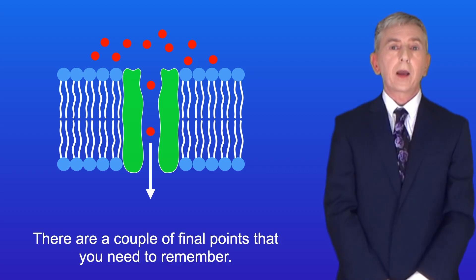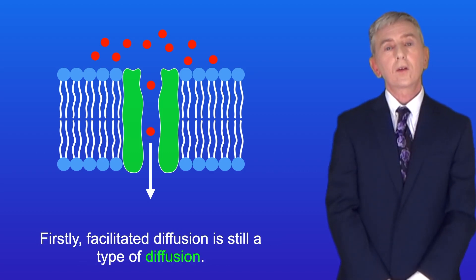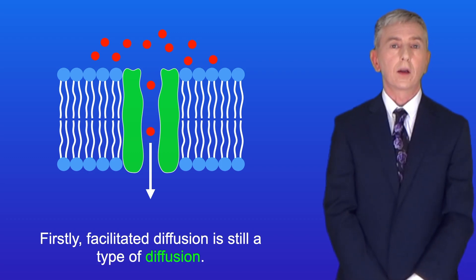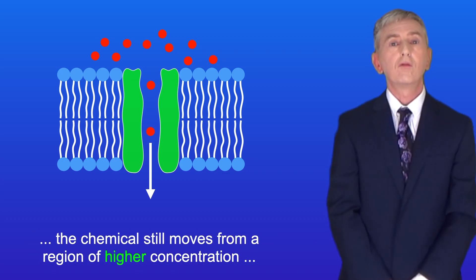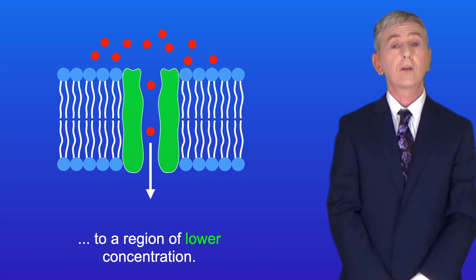Now, there are a couple of final points that you need to remember. Firstly, facilitated diffusion is still a type of diffusion. So even though chemicals diffuse via carrier proteins or protein channels, the chemical still moves from a region of higher concentration to a region of lower concentration.